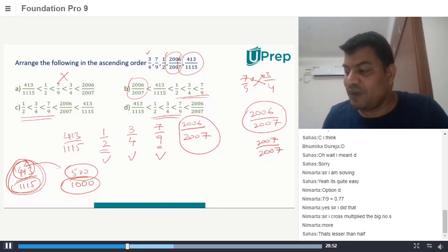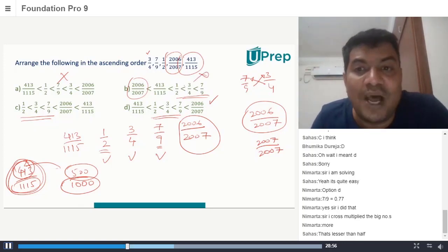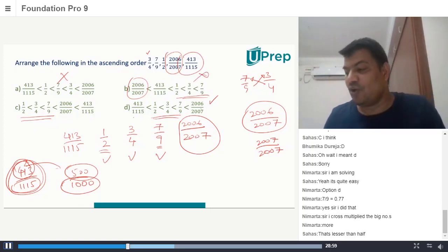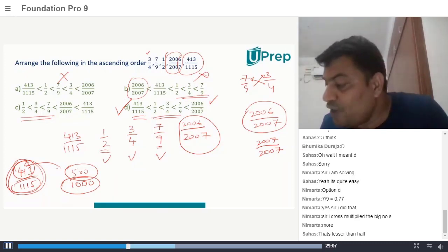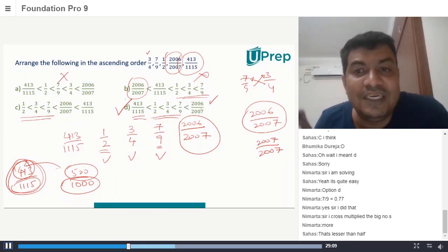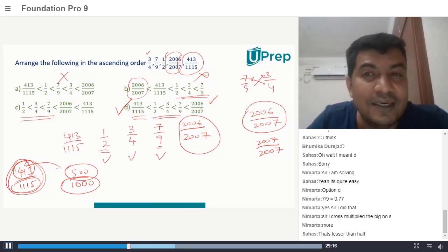But now the question is where is 2006/2007? If 2006/2007 cannot be less than 1/2 because it's close to 1, that means this number should move that side. So the option is, it's here. Now between this and this, how do you decide? You need to know where is this 413/1115. You can see it's less than half. This is the only option. So that's the reason your D is the correct answer. So this question doesn't require you to actually solve anything.